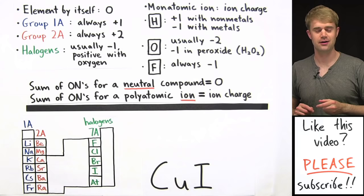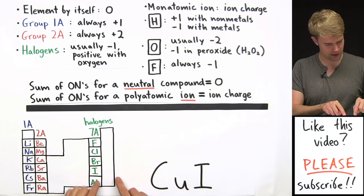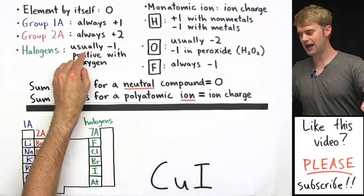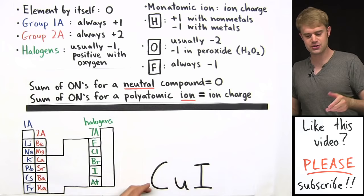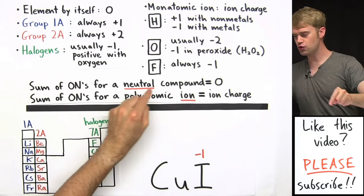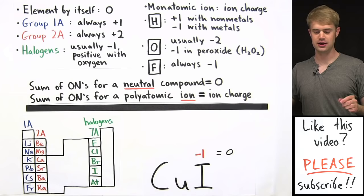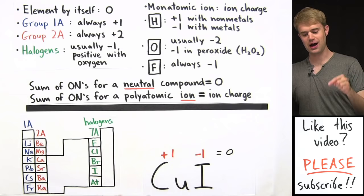Next example is CuI. There's not a rule for Cu, so we'll figure out its oxidation number using what we know. Iodine, I, is a halogen in group 7A, and halogens usually have an oxidation number of minus 1 though they're positive with oxygen. We aren't with oxygen here, so iodine is minus 1. Since this is a neutral compound, Cu's oxidation number must be plus 1 so that plus 1 plus minus 1 equals 0.